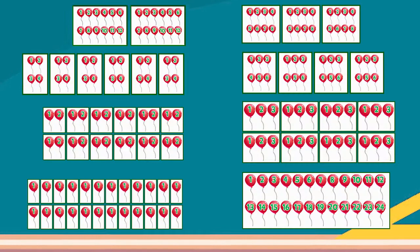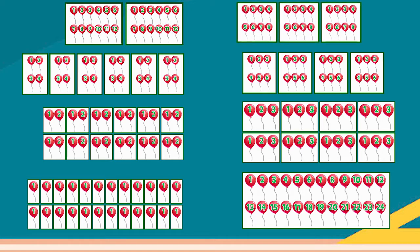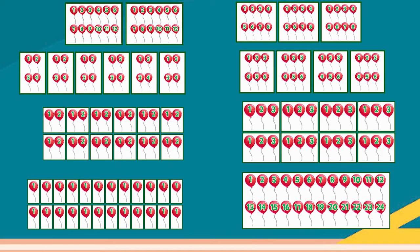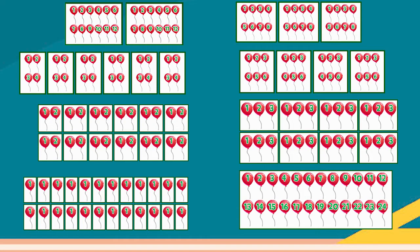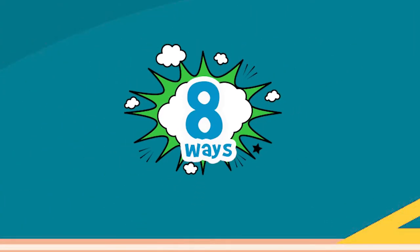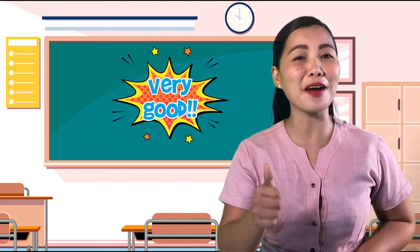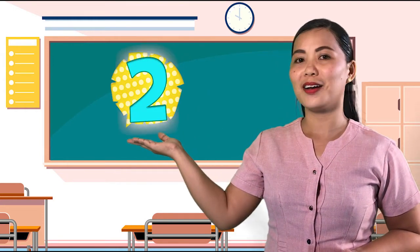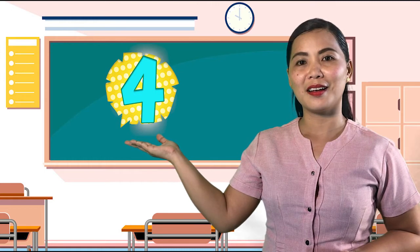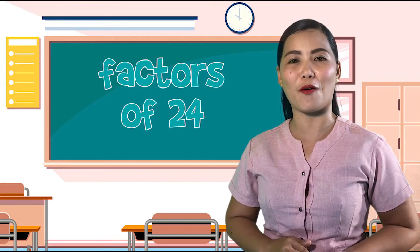Now, in how many ways can Anna give the balloons to her friends equally? Count with me! 1, 2, 3, 4, 5, 6, 7, and 8. There are 8 ways. What are the numbers that can divide 24 with no remainder? Very good! The numbers that can divide 24 with no remainder — these are the factors of 24.